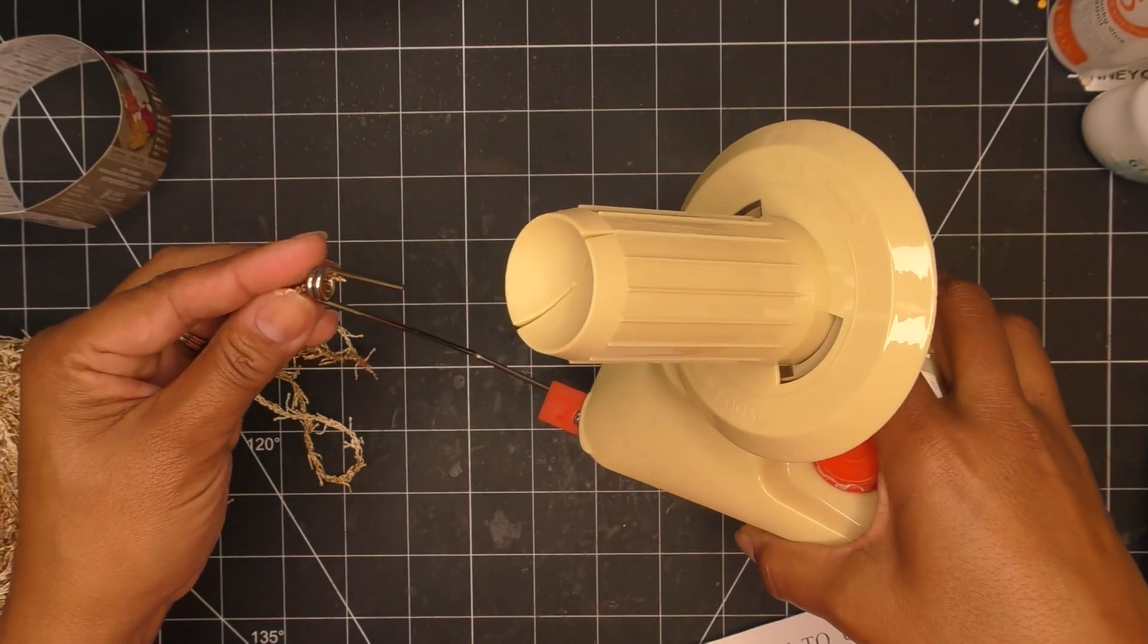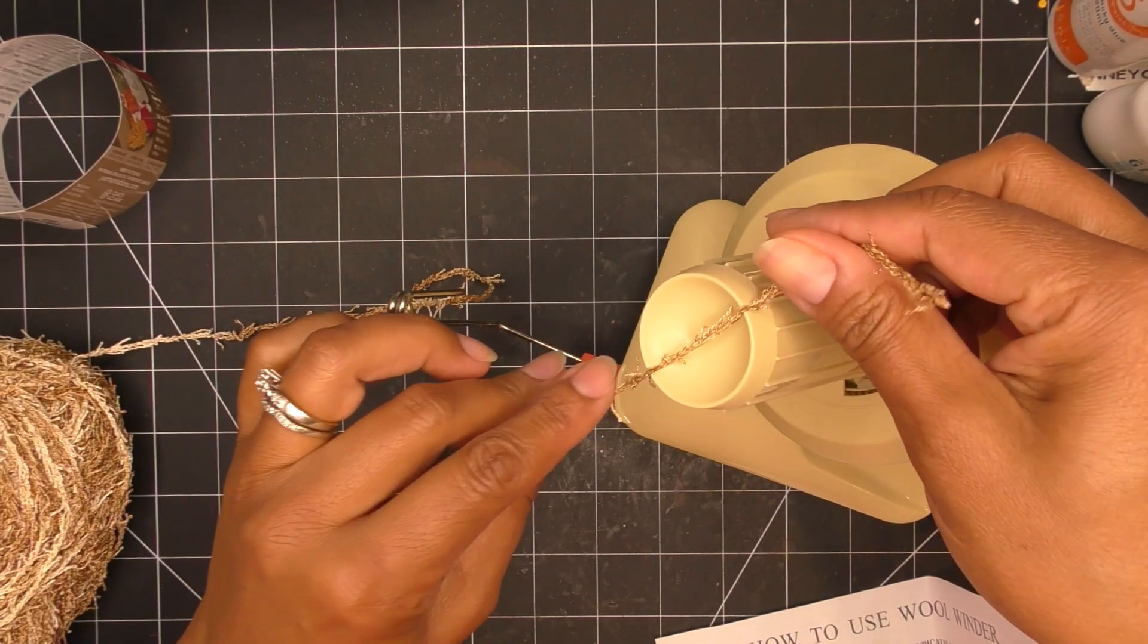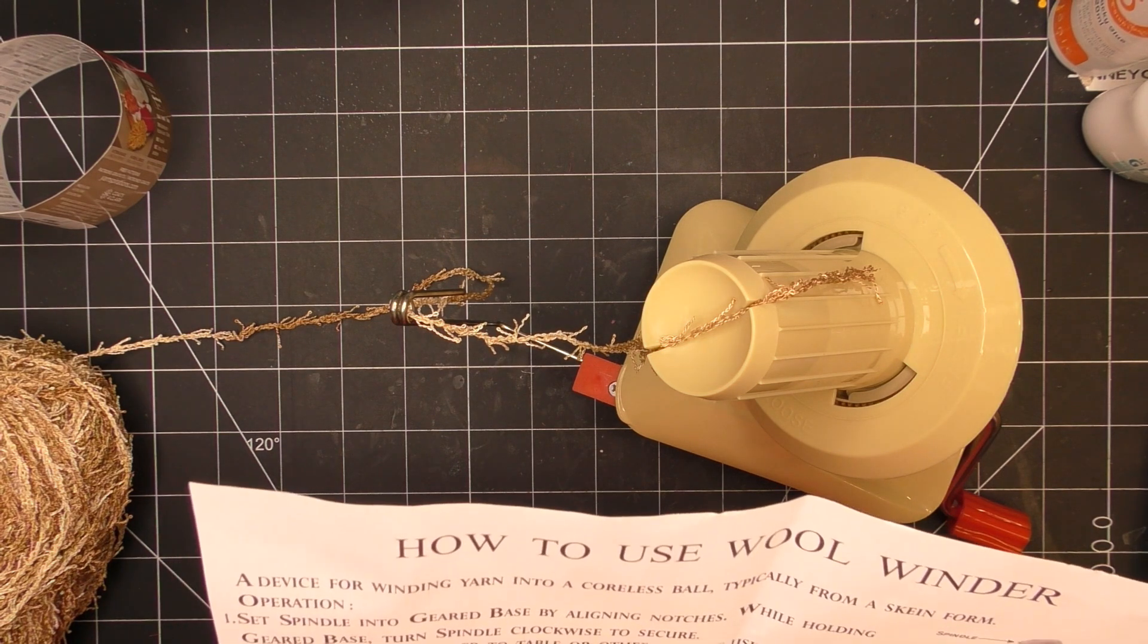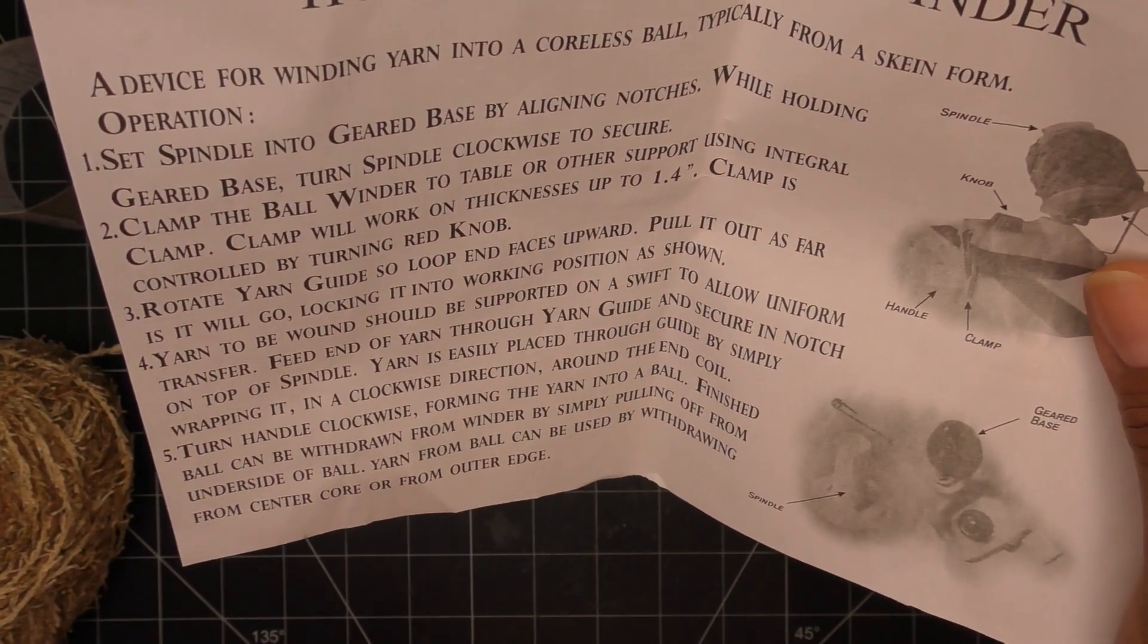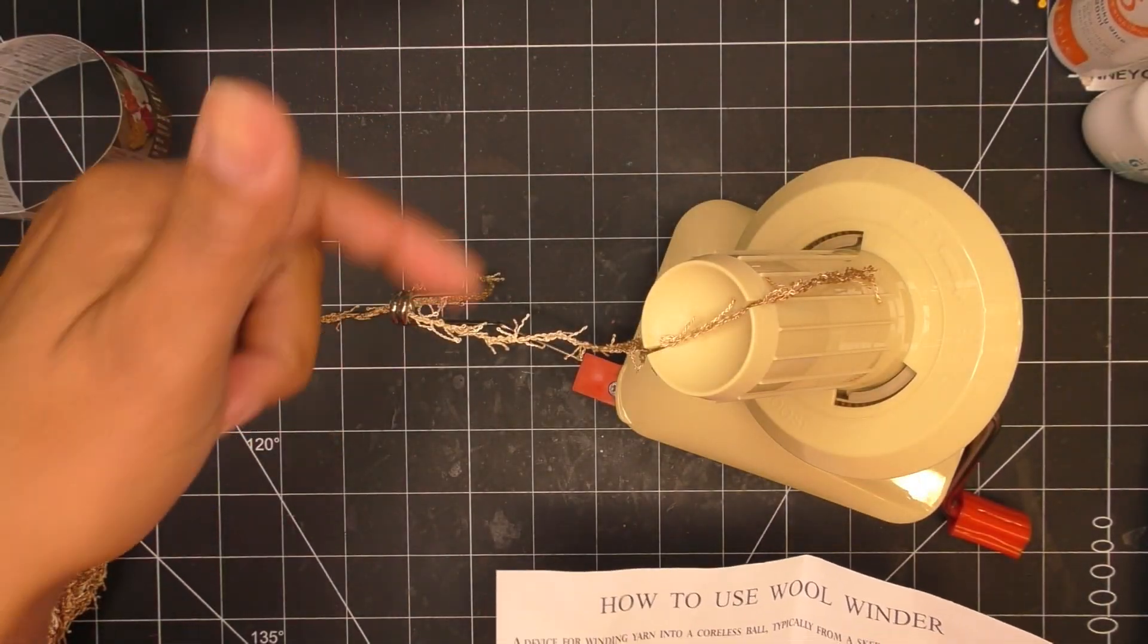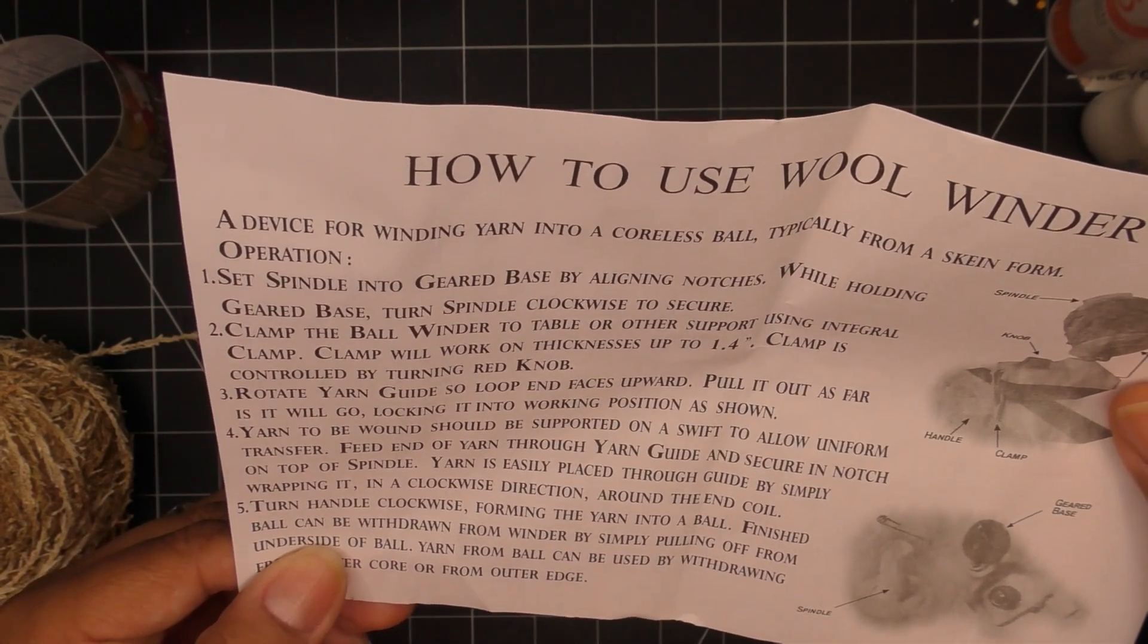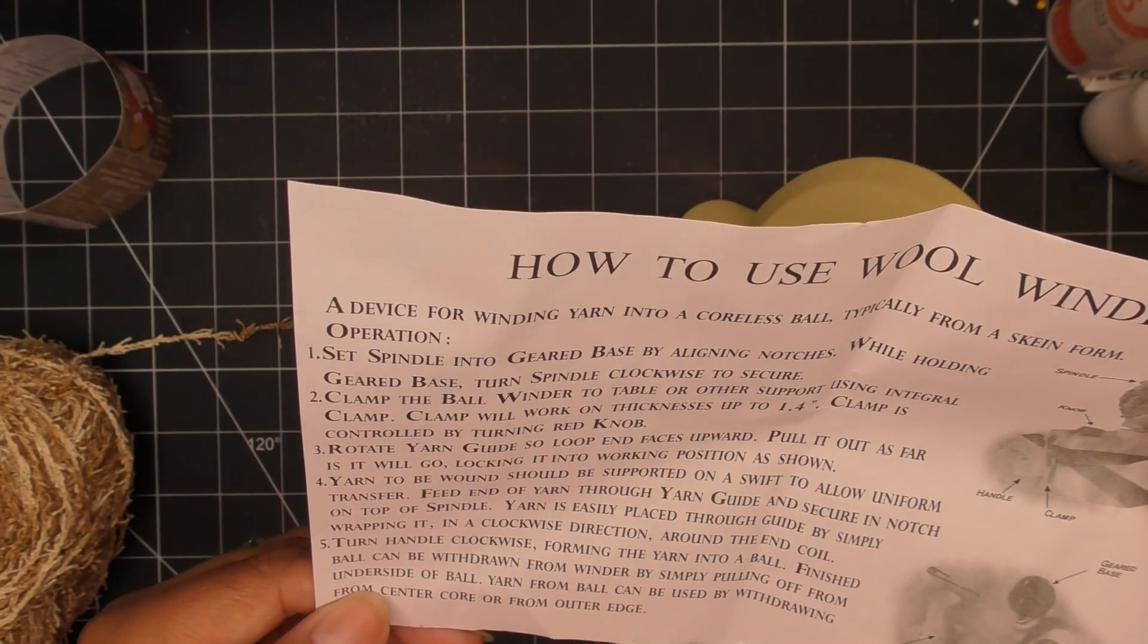I'm just gonna leave it here because I have no idea what they're talking about. You can go around and around or you can push this through the little hole. If you start it down here you can just kind of loop it around, but I'm just pushing it in here. I'm assuming we're just locking it in here. Yarn is easily placed through guide by simply wrapping it in a clockwise direction. You can just kind of follow the paper clippy of it. Turn handle clockwise forming the yarn into a ball.